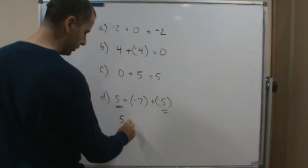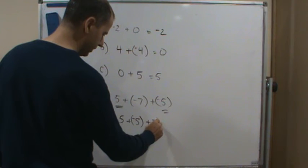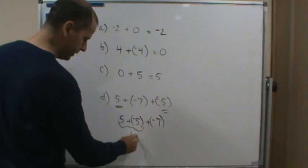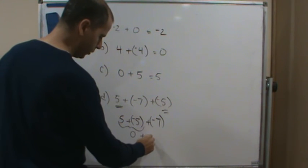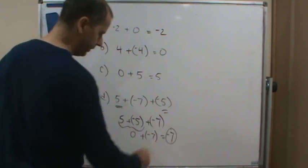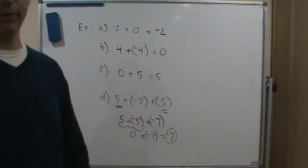So we can do 5 + (-5) + (-7). And now we know this is going to be 0. And then 0 + (-7) = -7. Okay? That's it. Have a great day.